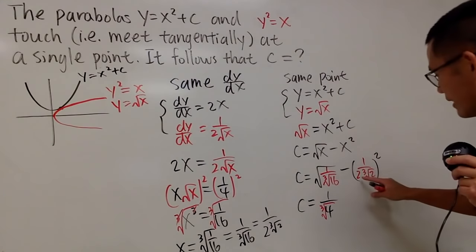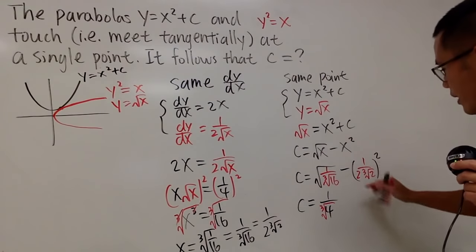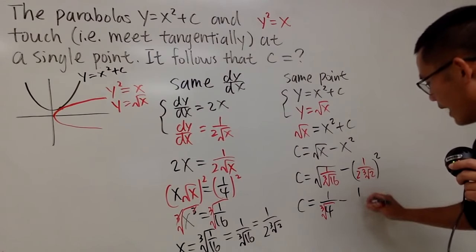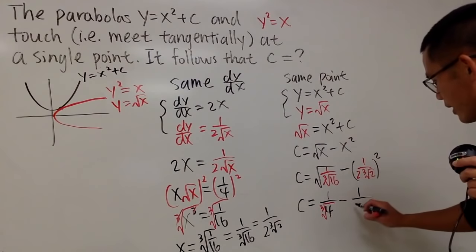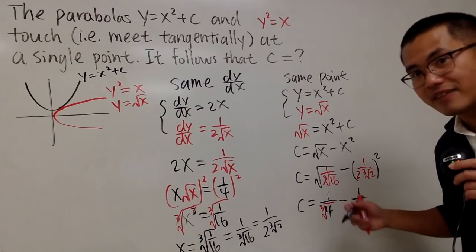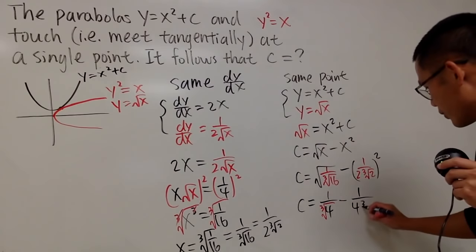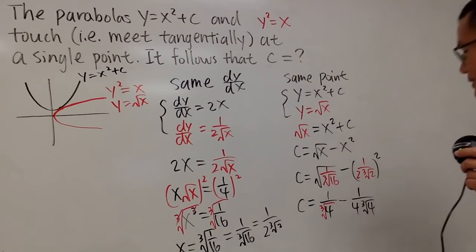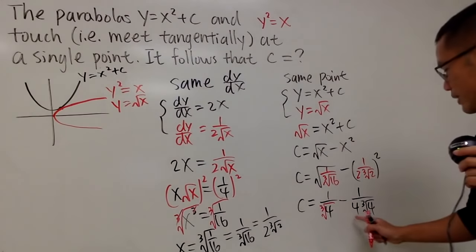And then for this, I can do the square. So, we have to minus 1, 1 squared is 1. 2 squared is 4, and then this squared is just 4, but we still have the cube root. So, we have the cube root of 4, like this.